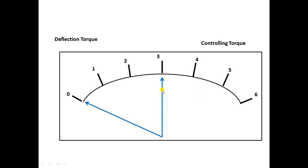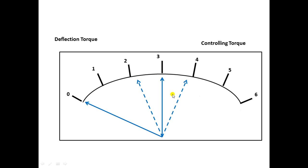However, the deflecting system and the controlling system both have inertia, so the pointer cannot perfectly stay at the equilibrium position. Because of inertia, the pointer moves past the equilibrium point; then the controlling torque is greater than the deflecting torque, so it moves back. Then the deflecting torque exceeds the controlling torque, pushing it forward again — and this repeats in both directions.